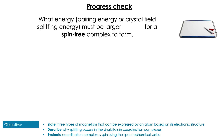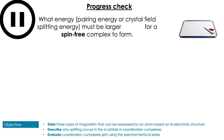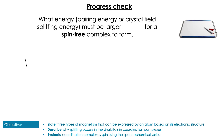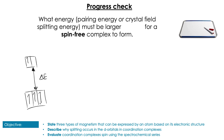Time for some questions. First question: which energy — pairing energy or crystal field splitting energy — must be larger for a spin-free complex to form? Pause the video. In a spin-free complex we preferentially put unpaired electrons in the higher-energy eg orbitals first, which means the pairing energy must be larger than delta E.